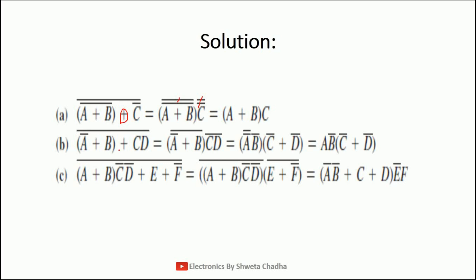For the first example, separating the whole bar: (a plus b) gets a second bar, plus becomes dot, and c double bar. The double bars cancel out, so the final answer is (a plus b) dot c. For the second example, take the plus as the middle variable and separate the whole bar into two segments. You get (a bar plus b) whole bar, plus becomes dot, and (c dot d) whole bar. Applying De Morgan's theorem again: plus becomes dot and dot becomes plus, giving a dot b bar bracket c bar plus d bar.